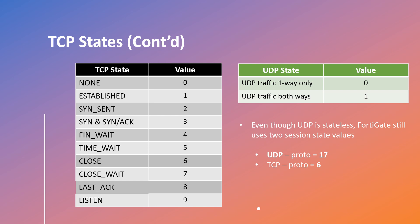TCP session states along with their values are shown in this table. If the session is established, the value is 1; if there's a time wait, the value is 5; if the session is closed, the value is 6, and so on. Interestingly, even though UDP is stateless, the FortiGate firewall still maintains two session state values for UDP — if it's one-way traffic the value is 0, and if it's both ways the value is 1. You see these values in debug logs while troubleshooting live packet flows. The protocol number for UDP is 17 and for TCP is 6.